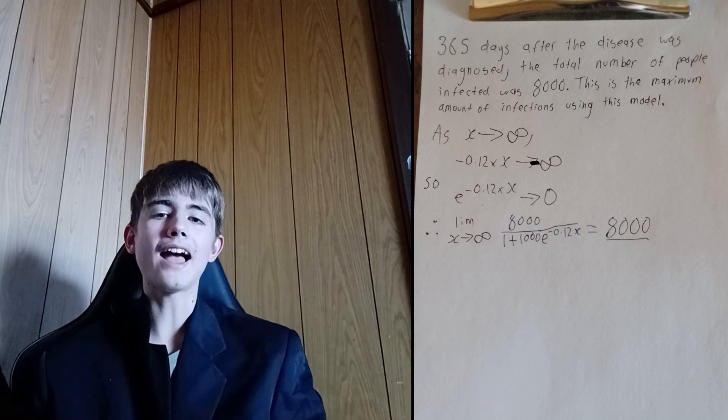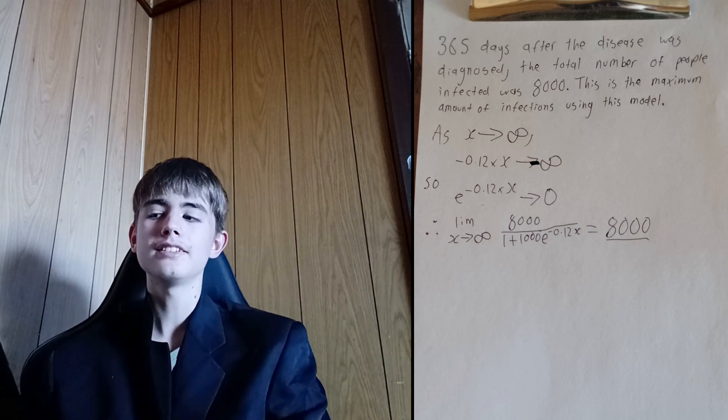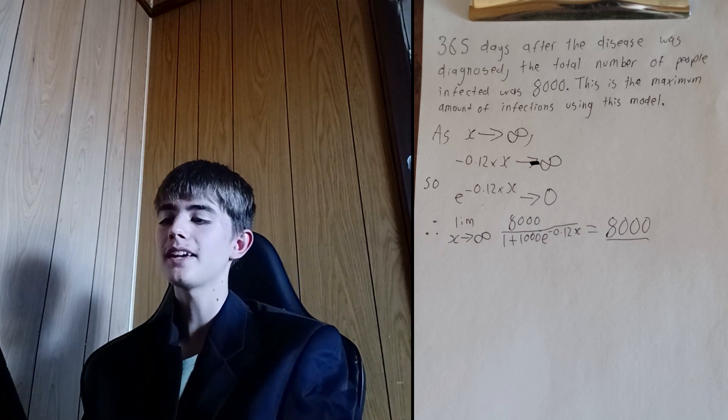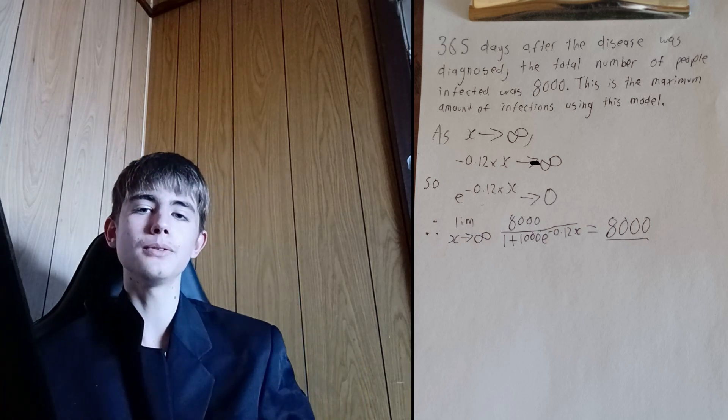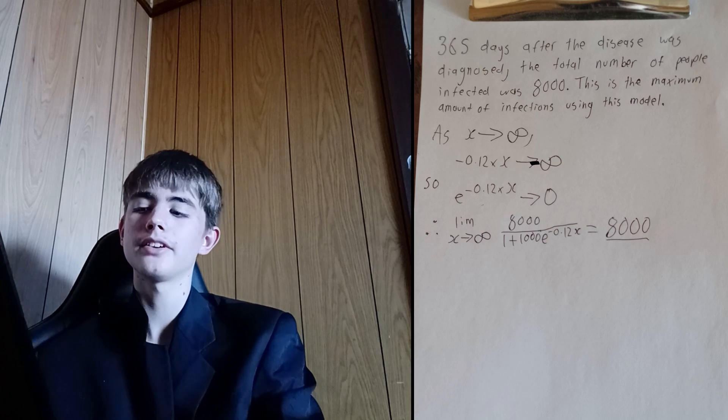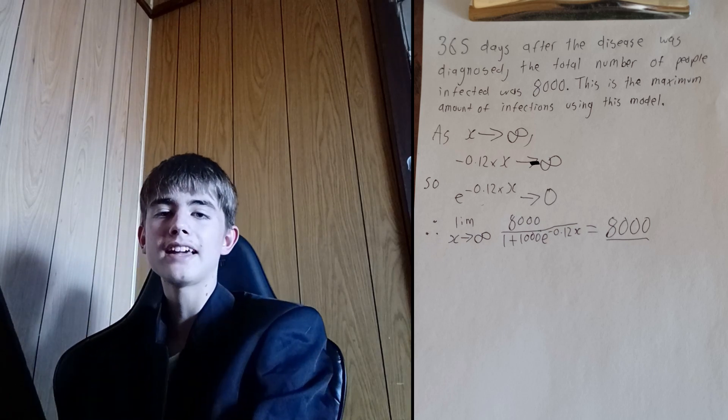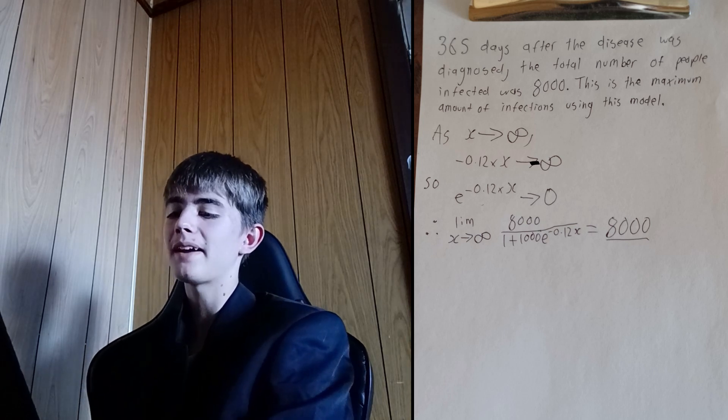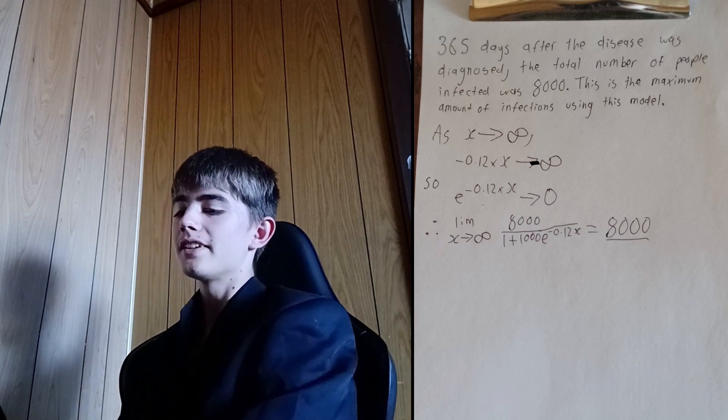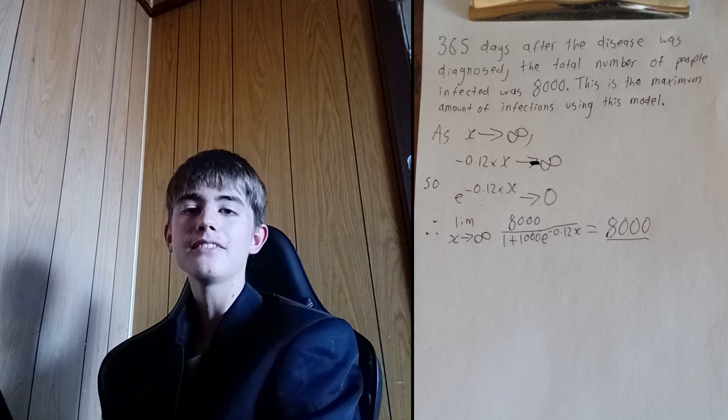So here's the proof. As x approaches infinity, negative 0.12 times x will approach negative infinity. So e to negative infinity will be 0. So the limit as x approaches 0 of 8000 all over 1 plus 1000 e to the power of negative 0.12 times x is going to be 8000.